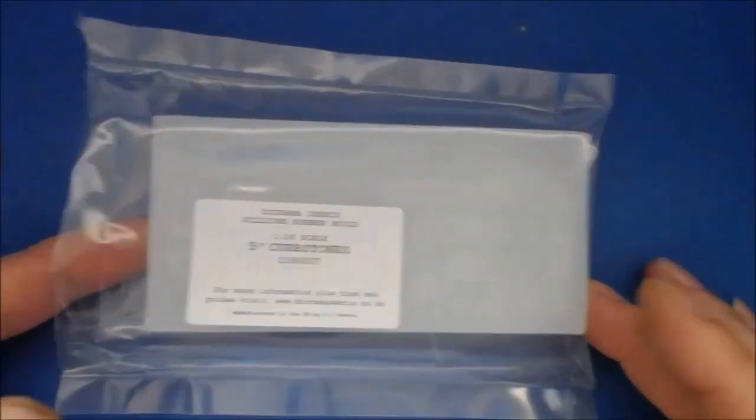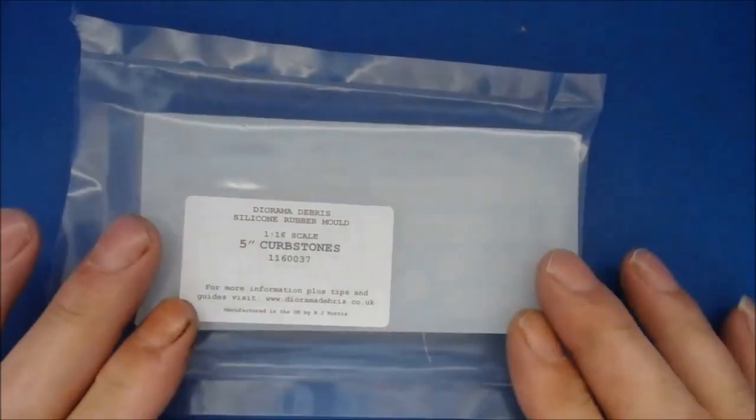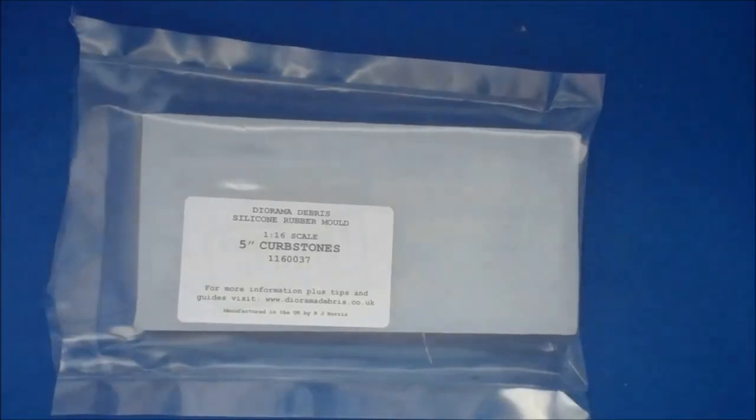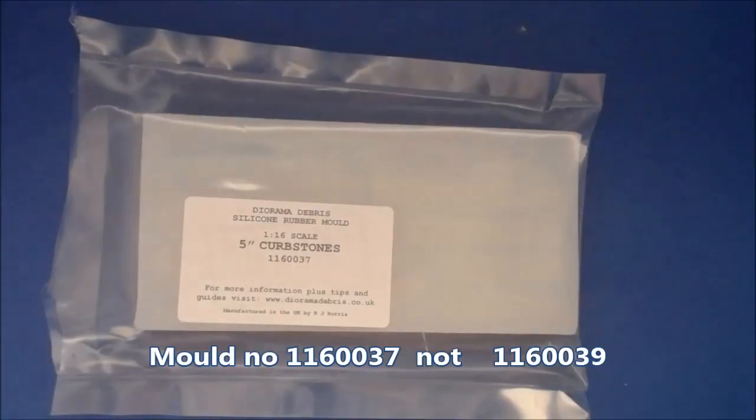Hi everybody, welcome to another mold review. I'll run through like I normally do. This is a mold from Diorama Debris. It's a rubber silicon mold in 1:16 scale, and it's a 5-inch kerbstone. The mold number is 116-0039, produced in the UK by RJ Norris.